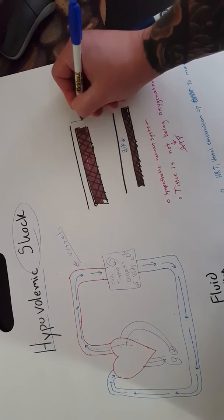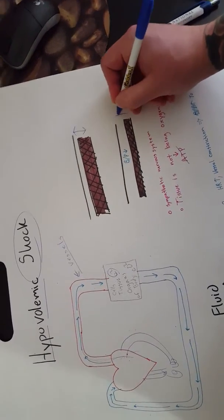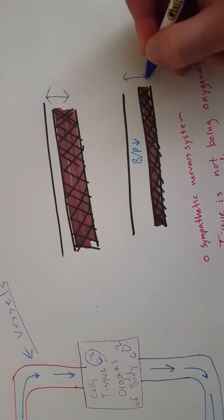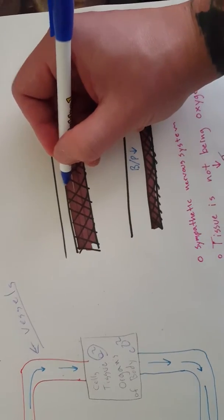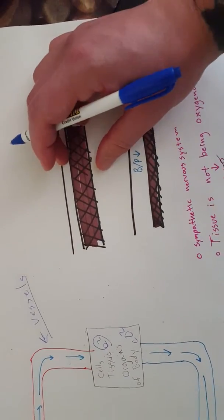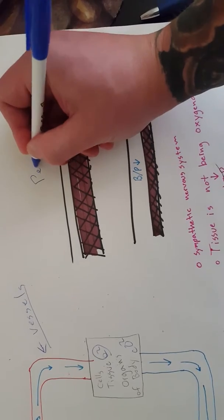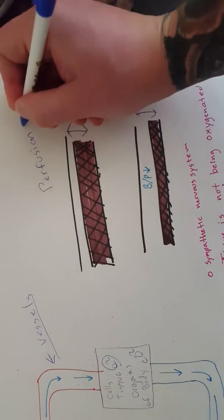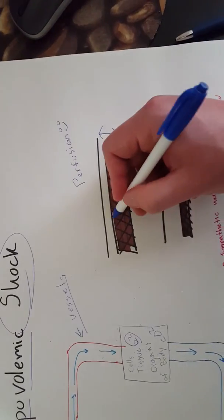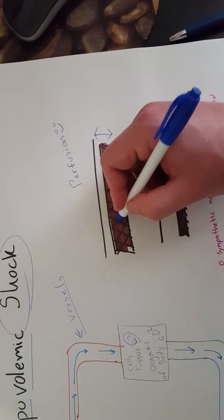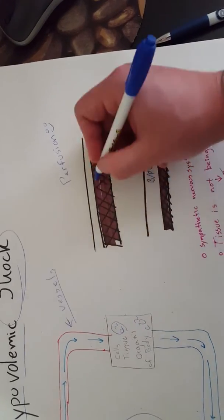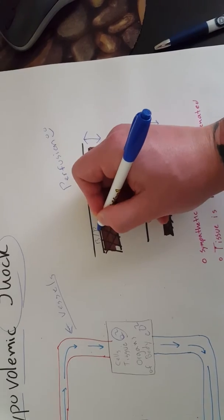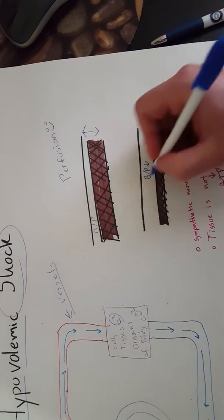Let's say this is a vessel when you're perfusing adequately, so perfusion is good. I'll put a smiley face for good. We have enough volume in the container, so if there's enough volume, that means your blood pressure is going to be pretty good because it's pumping out. Now if...